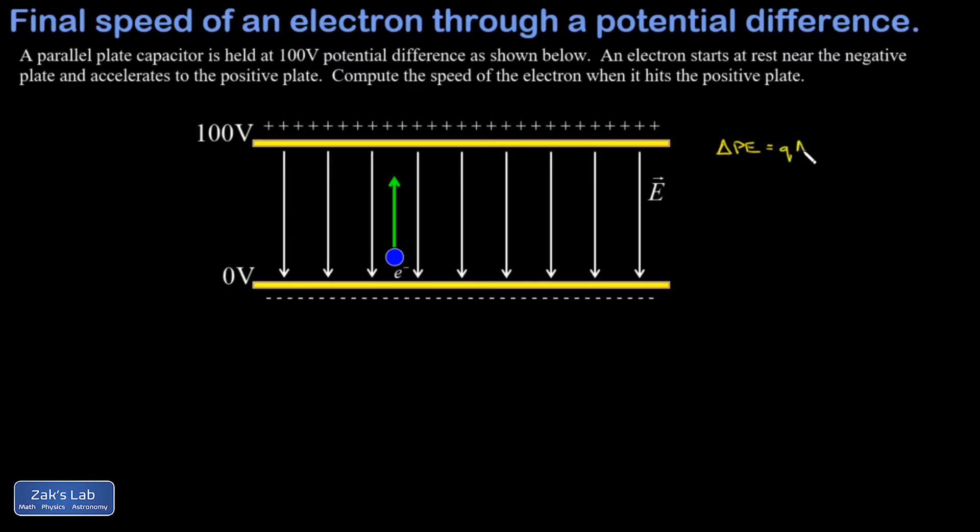And that's given by Q times delta V. The charge on the electron is negative 1.6 times 10 to the negative 19 coulombs. And delta V is the final minus initial, so 100 volts minus 0 volts.